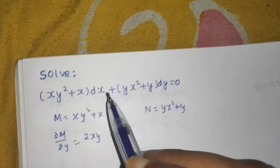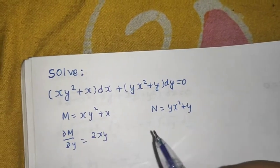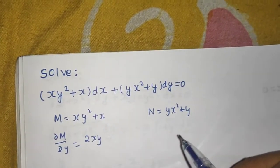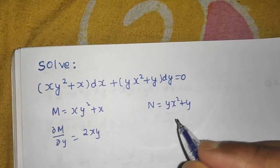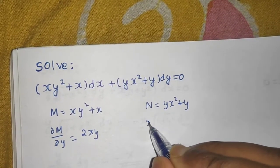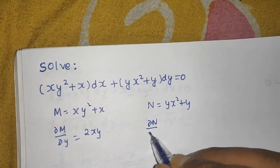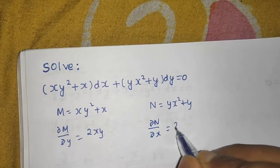I have discussed it deeply in my lecture session, so you can visit that. Now we partially differentiate N with respect to x, so you are again getting 2xy.